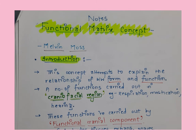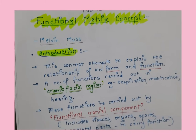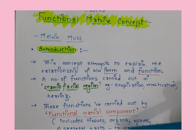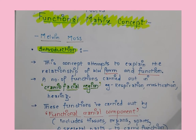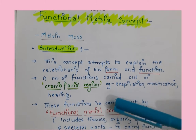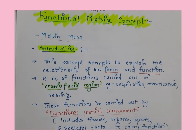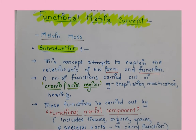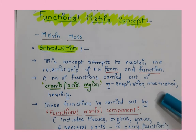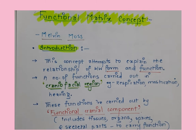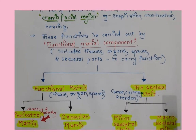Basically, this functional matrix concept talks about form and function. A number of functions are carried out in the craniofacial region, like respiration, mastication, and hearing. Mastication, for example, is not brought about by teeth alone — the alveolar bone, teeth, muscles of mastication, and occlusion all work together. These functions are carried out by what we call the functional cranial component.